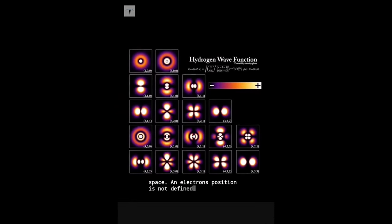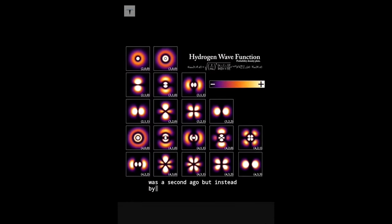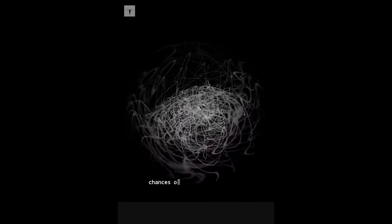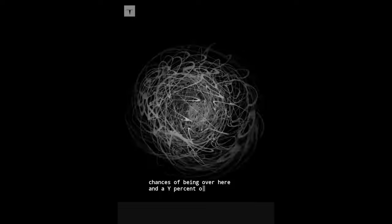An electron's position is not defined by where it was a second ago, but instead by what we call the probability cloud. An electron has X percent chance over here and Y percent chance over there.